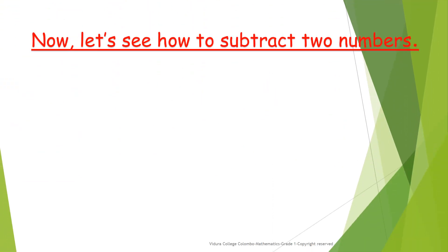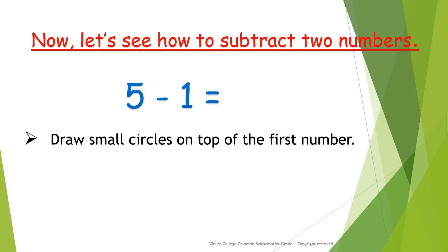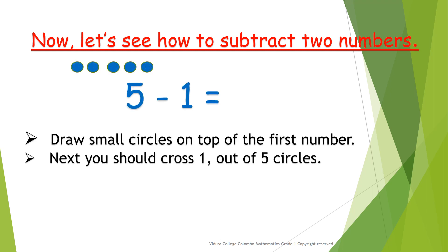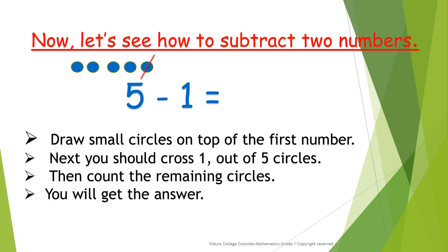Now, let's see how to subtract two numbers. Five minus one. Draw small circles on top of the first number. Then, you should cross one out of five circles. Then, count the remaining circles. One, two, three, four. Five minus one equals to four.